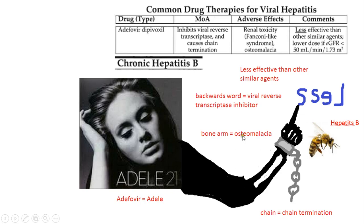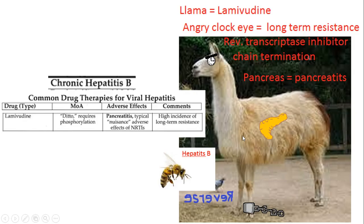Next we have lamivudine — this one was also covered in the HIV medications, so the llama comes up again. Obviously, lami equals llama. The method of action is the same: chain termination. It's also for hepatitis B, so lots of bees flying around scare the llama. It has a clock for an eye because there's a high incidence of long-term resistance, and pancreatitis is a typical adverse effect of NRTIs, so I drew its pancreas.